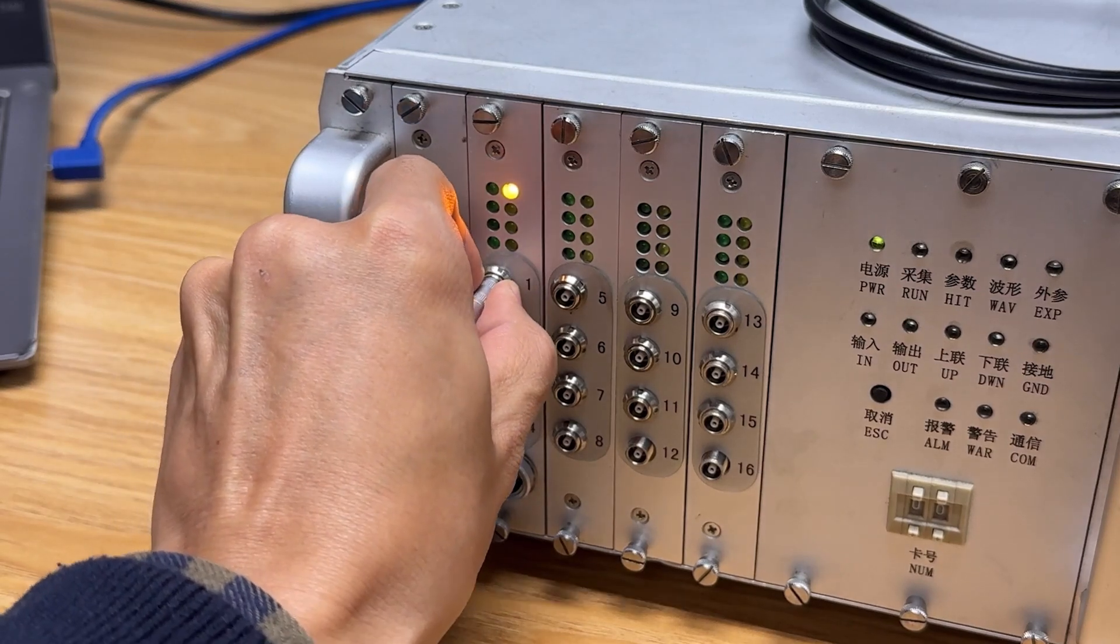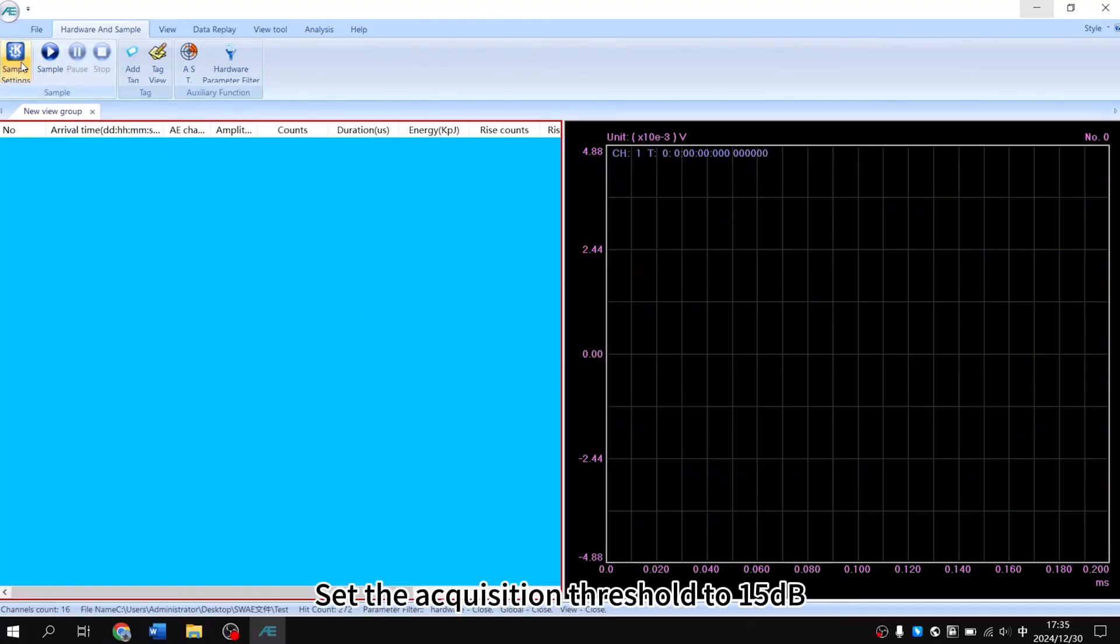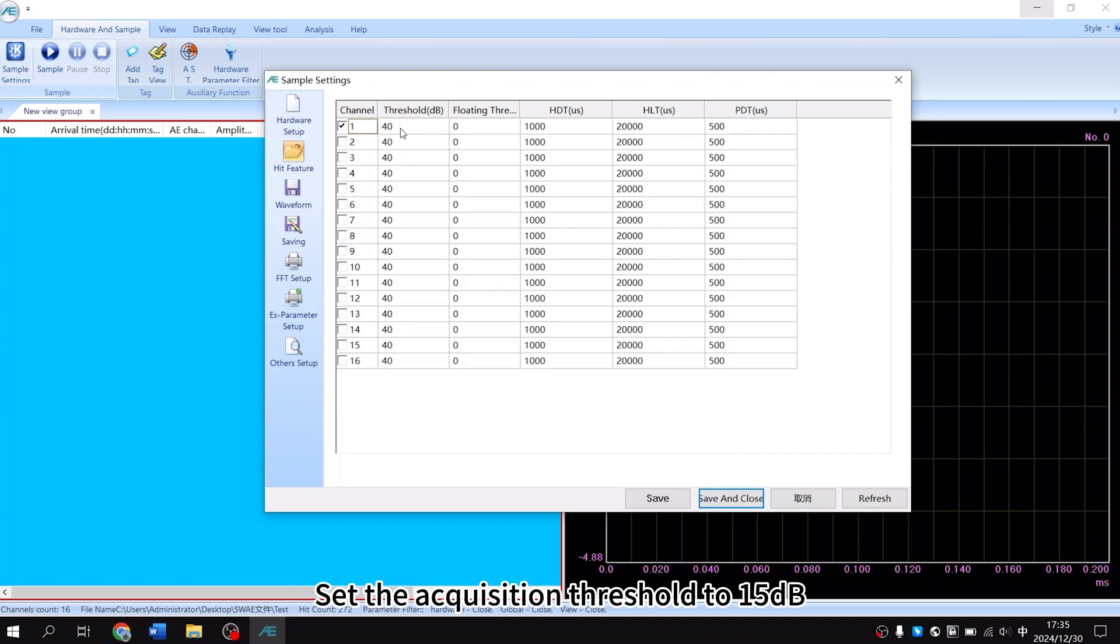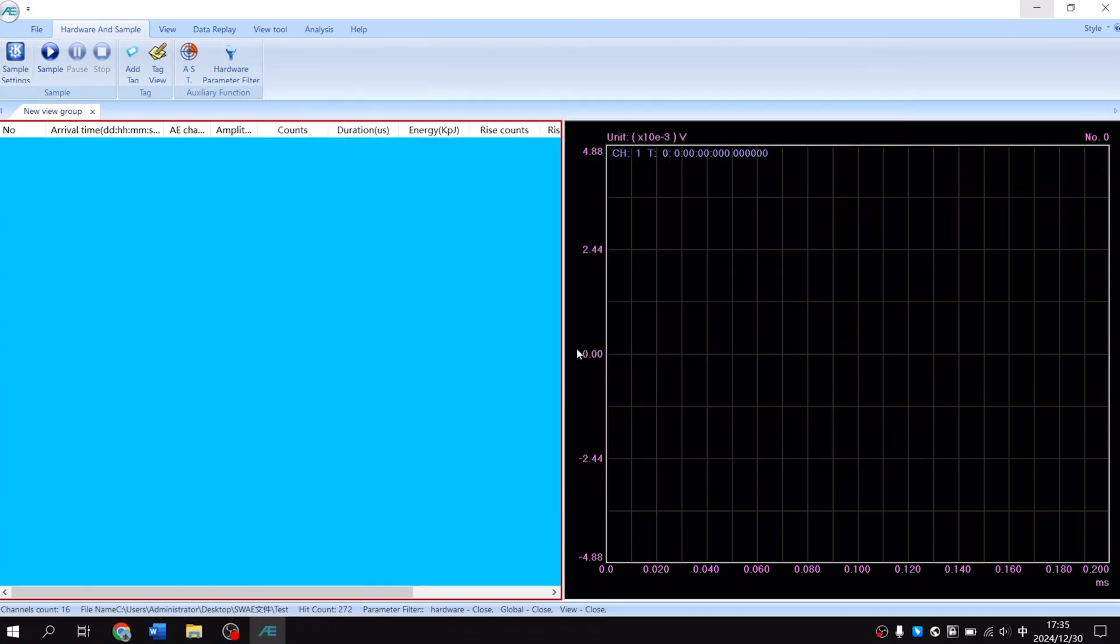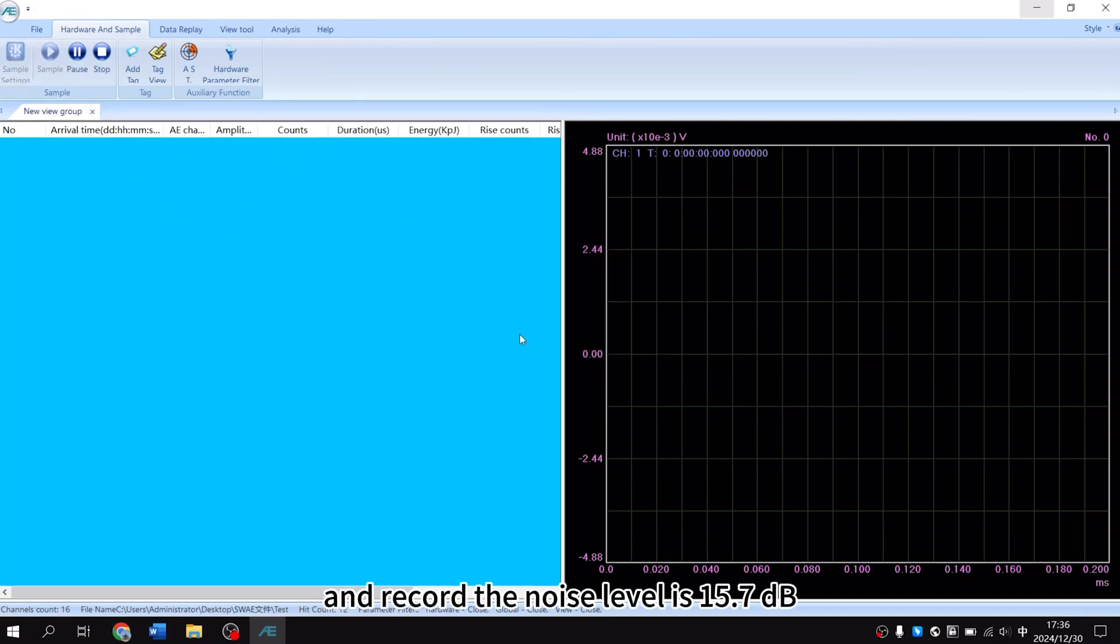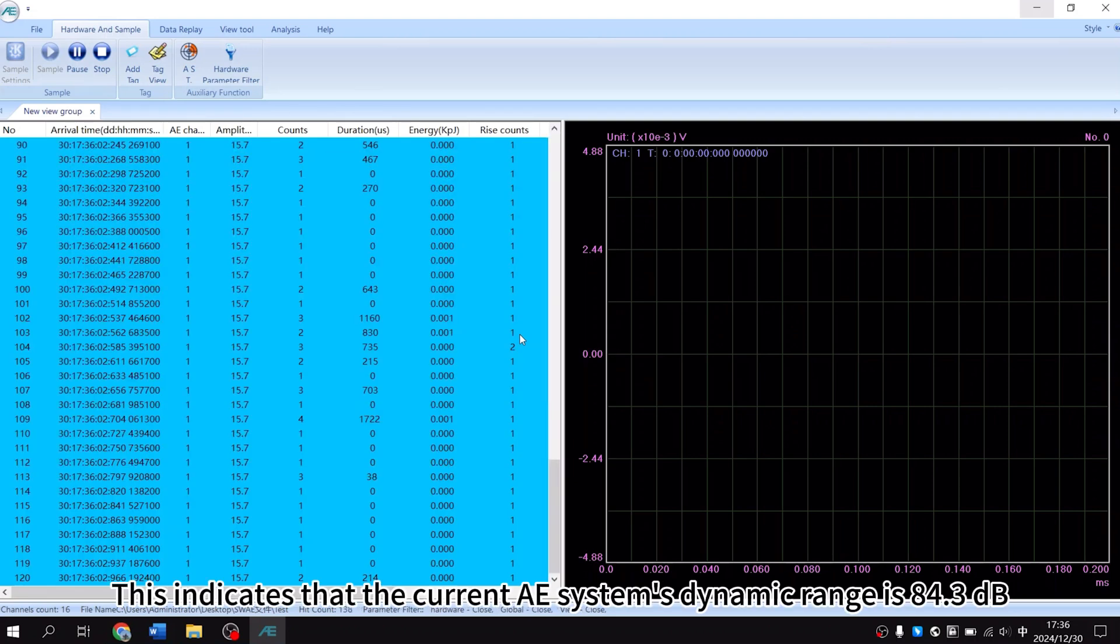Then test the system noise. Disconnect the cable. Set the acquisition threshold to 15 dB and record the noise level is 15.7 dB. This indicates that the current AE system's dynamic range is 84.3 dB.